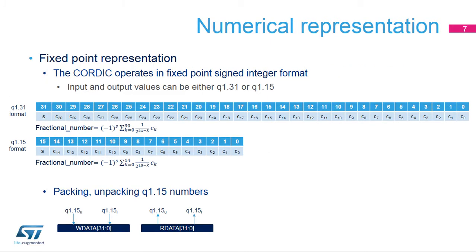In Q1.31 format, numbers are represented by one sign bit and 31 fractional bits. The numeric range is therefore minus 1 (or 0x80000000) to 1 minus 2 raised to the negative 31 (or 0x7FFFFFFF). The precision is 2 raised to the negative 31, i.e., around 5 times 10 raised to the negative 10.